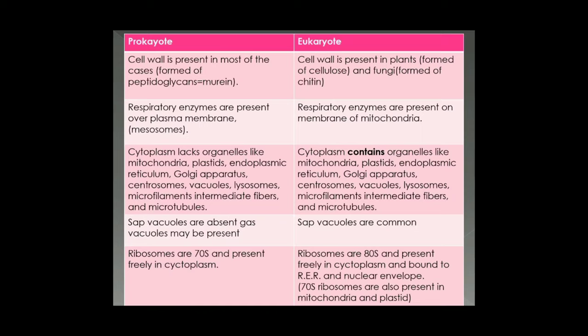The cytoplasm of prokaryotic cells lacks organelles like mitochondria, plastids such as chloroplast, endoplasmic reticulum, Golgi apparatus, centrosomes, vacuoles, lysosomes, microfilaments, intermediate fibers, and microtubules — all parts of the cytoskeleton are absent. Eukaryotic cells contain all these organelles: mitochondria, plastids, endoplasmic reticulum, Golgi apparatus, centrosomes, vacuoles, lysosomes, microfilaments, intermediate fibers, microtubules, and all cytoskeletal structures. Regarding vacuoles, sap vacuoles are absent in prokaryotic cells, though gas vacuoles may be present. Sap vacuoles are common in eukaryotic cells.